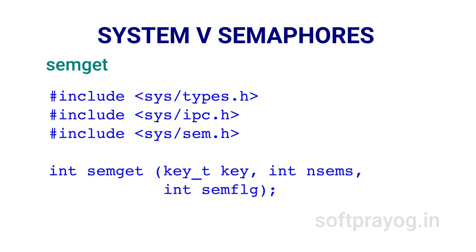semget gets a set of semaphores associated with the first argument key. Notably, you get not one but a set of semaphores with semget. The key can be obtained using ftok, or you could pass the IPC_PRIVATE constant as the first parameter and a new set of semaphores is created. If you pass a key obtained from ftok and specify IPC_CREAT in semflg, a new set is created and the semaphore set ID is returned. If both IPC_CREAT and IPC_EXCL are specified and the set already exists, semget fails with errno set to EEXIST. The second argument nsems specifies the number of semaphores in the set — it should be greater than 0 and at most SEMMSL.